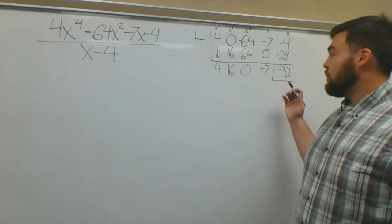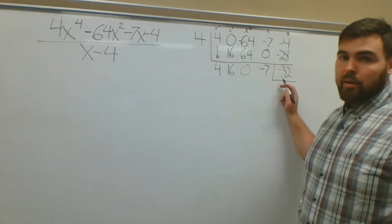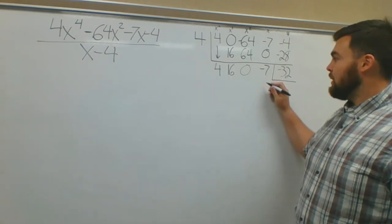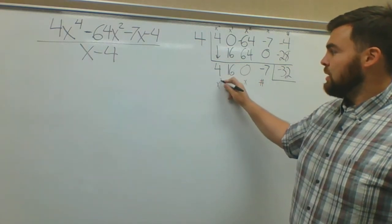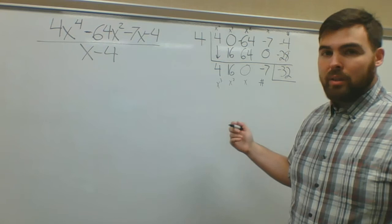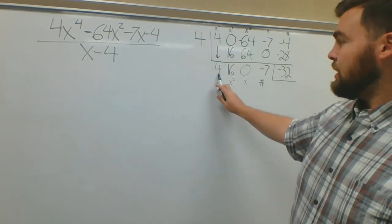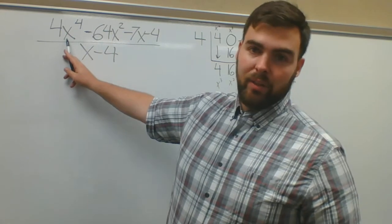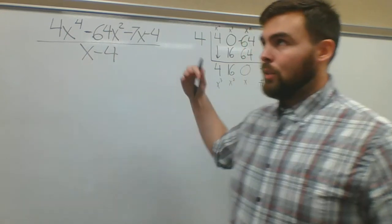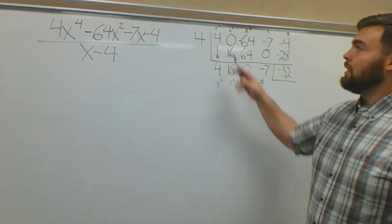So from here, again, remainder, remainder. Let's worry about this stuff first. This is my constant, this is my x, this is my x squared, this is my x to the third. One thing you might notice.